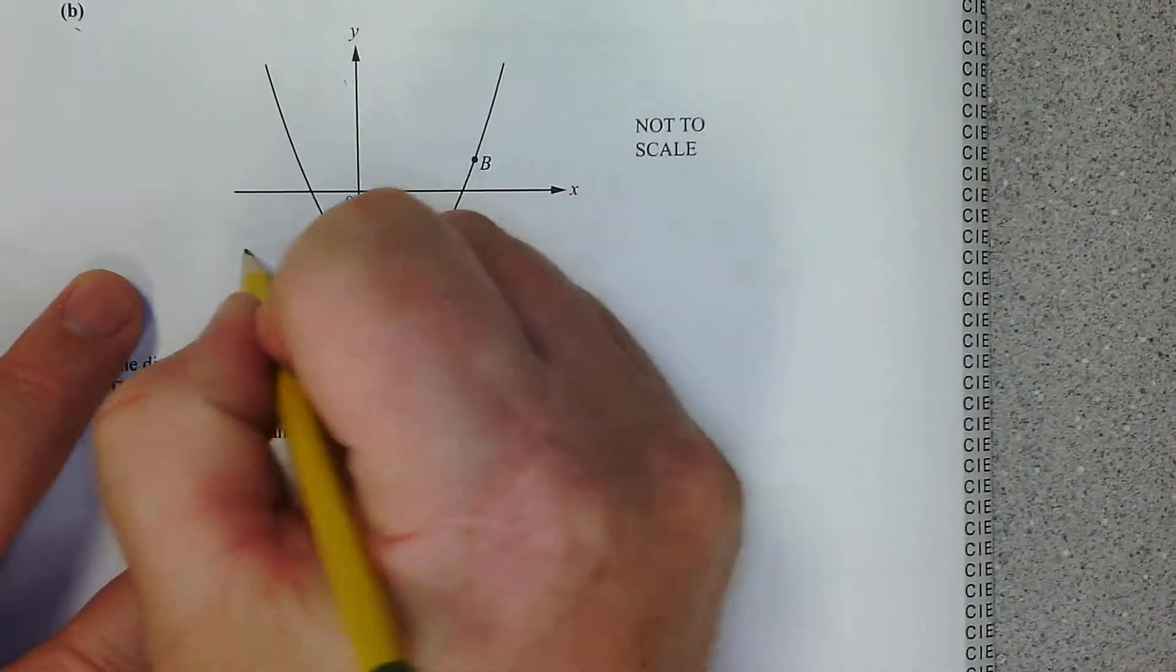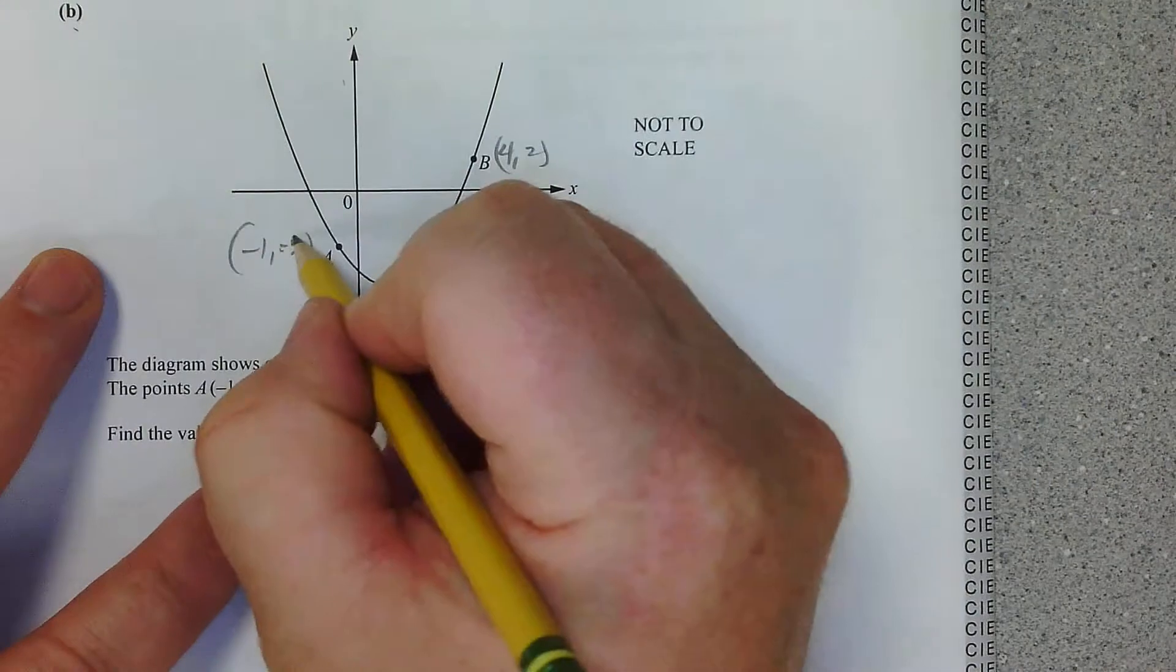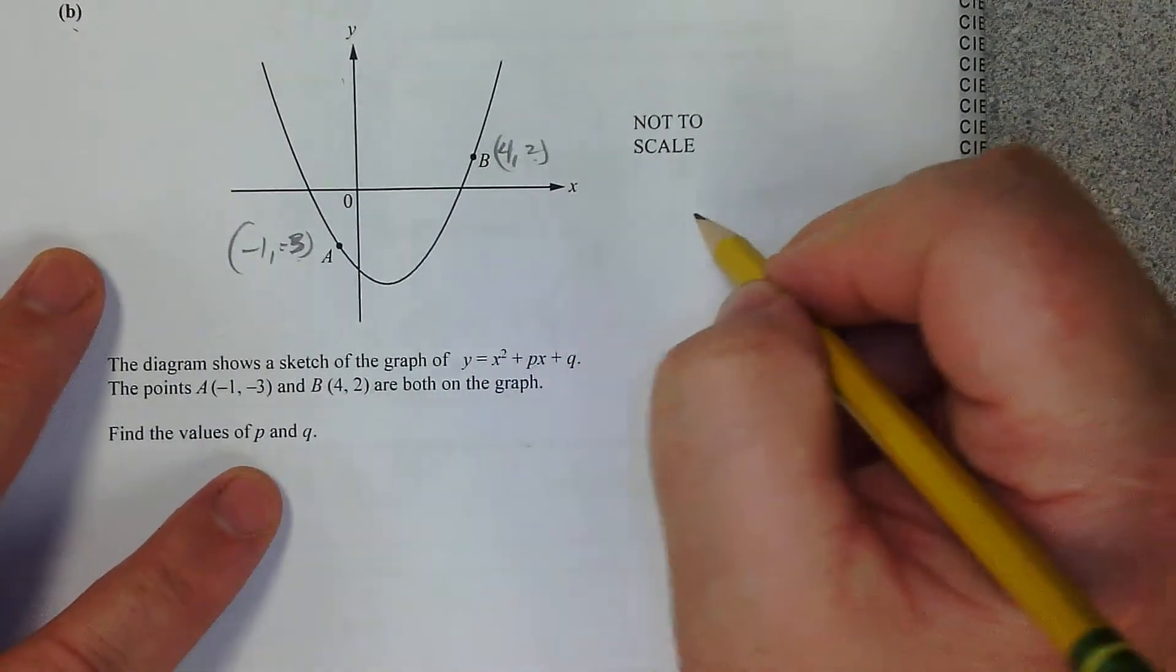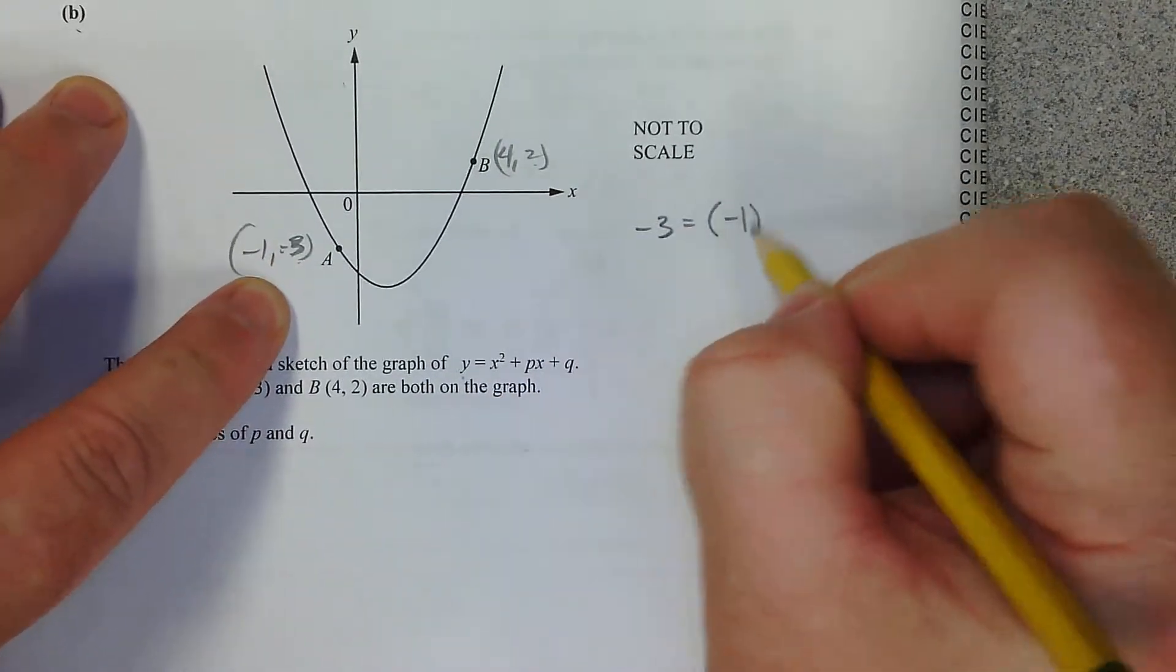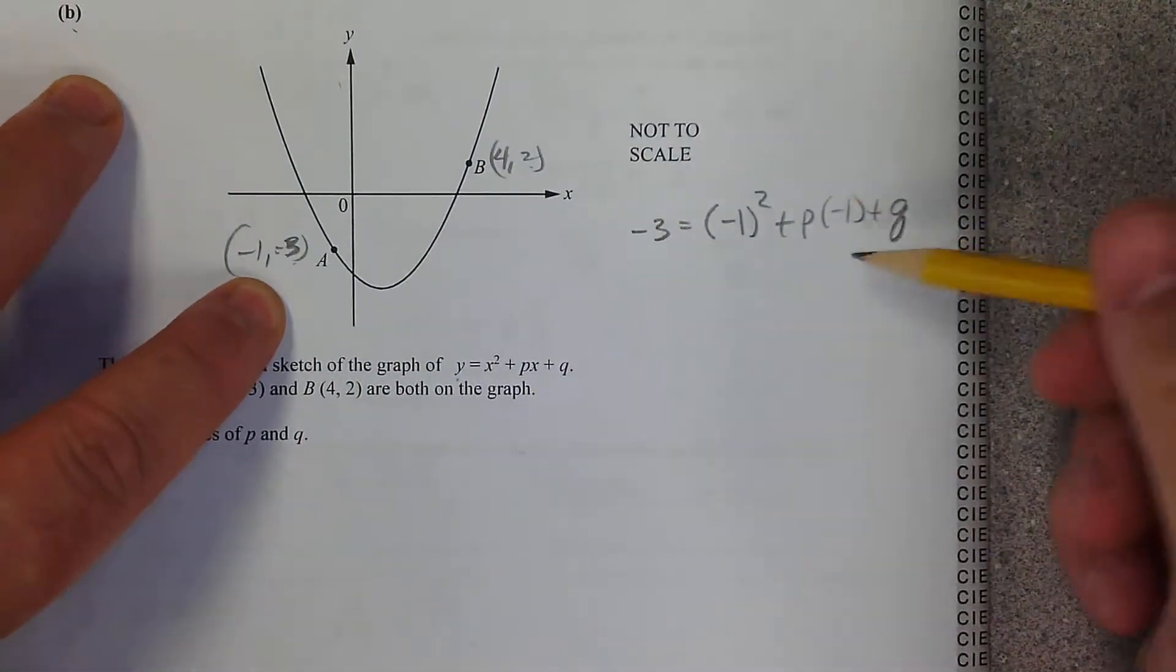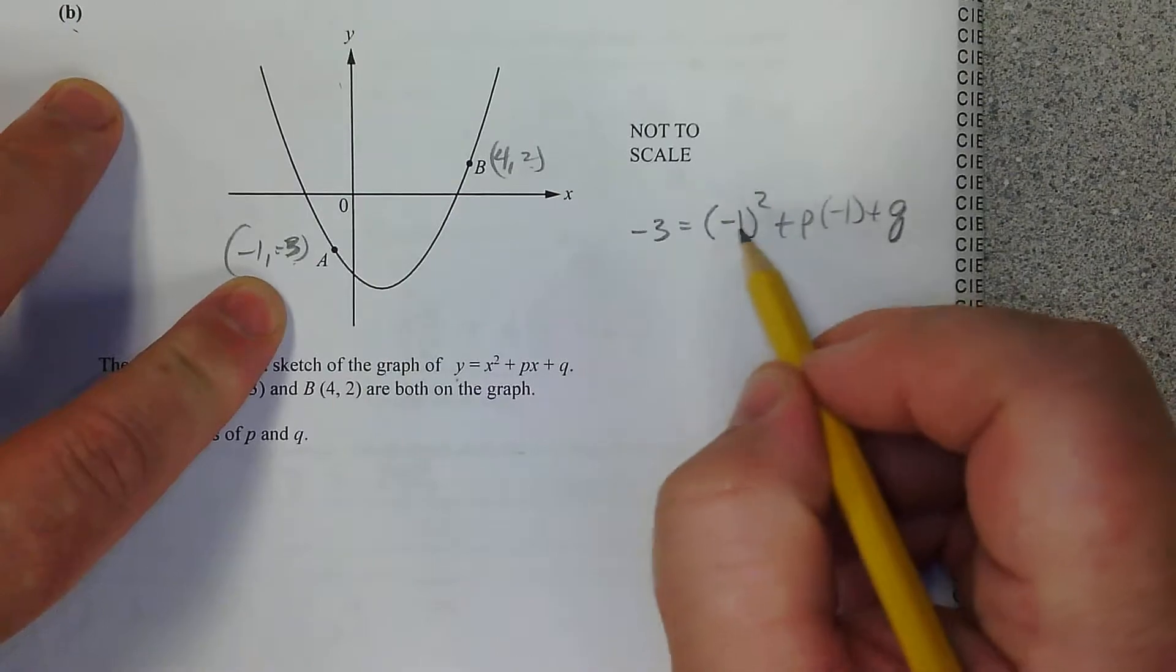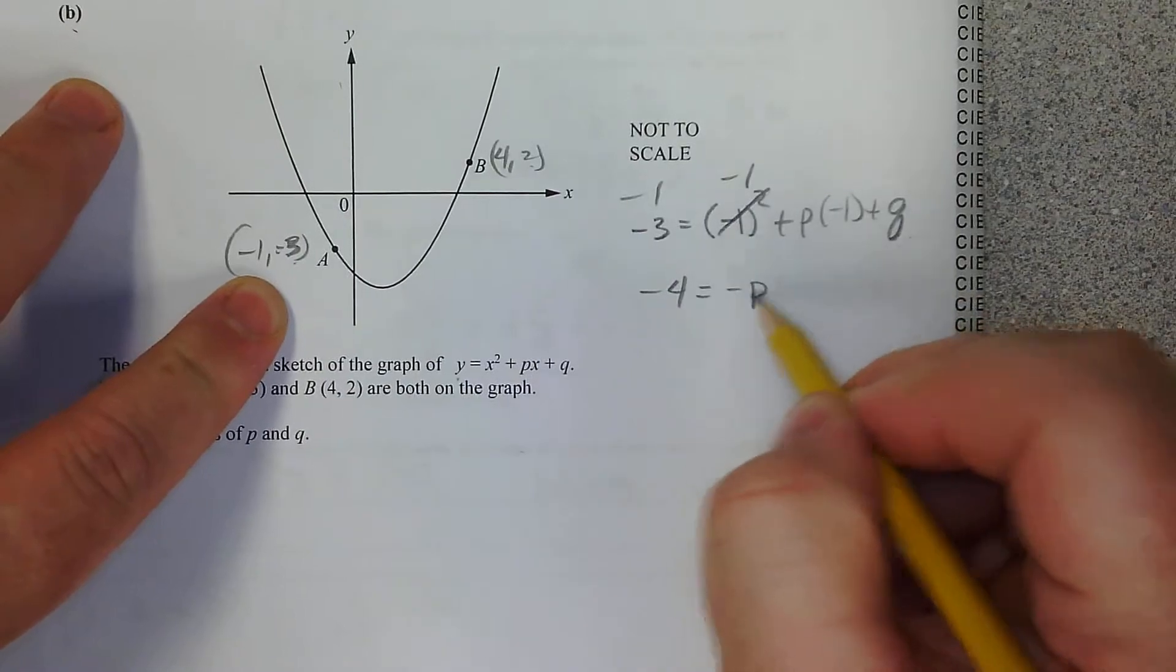Check this out. Here's what we know. We know that this is negative 1, negative 3, and this is 4, 2. We know that this x and that y are a solution to this equation, and this x and this y are also a solution. We know that y equals negative 3 when x is negative 1. This is true because it's a point on the graph, so it's a solution to this equation.